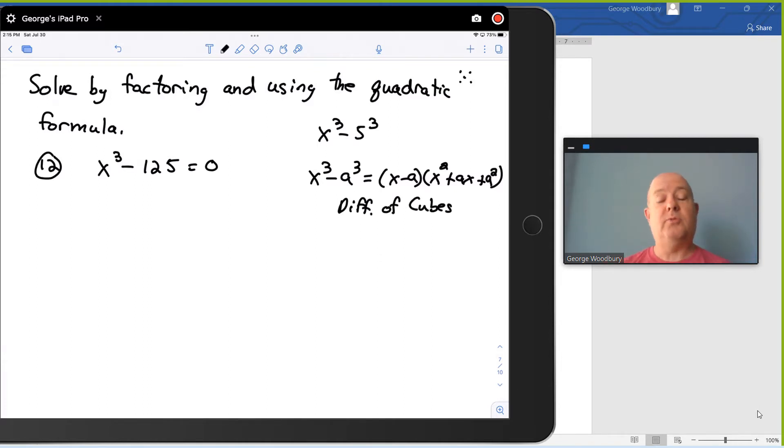There's also a formula for a sum of cubes, so if you add x cubed plus 125, the only things that would change would be a couple of the signs. X cubed plus a cubed is x plus a times x squared minus ax plus a squared. The last one is always plus a squared, but notice that the first two signs that we wrote down have been flip-flopped from the difference.